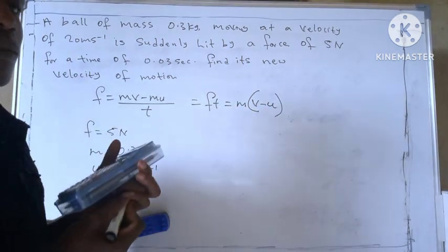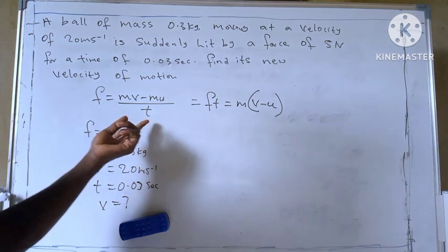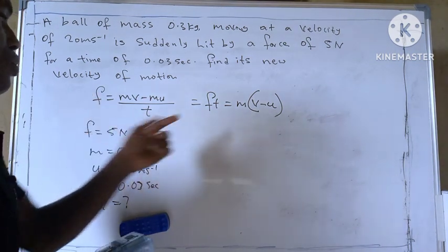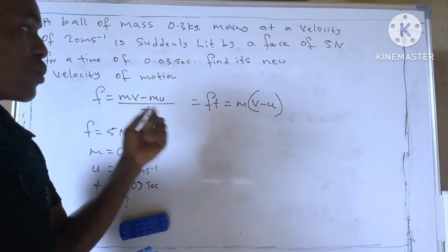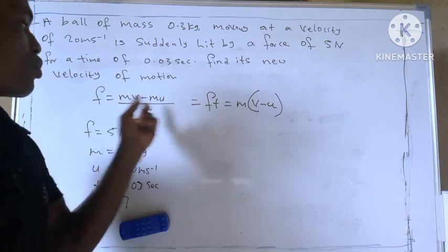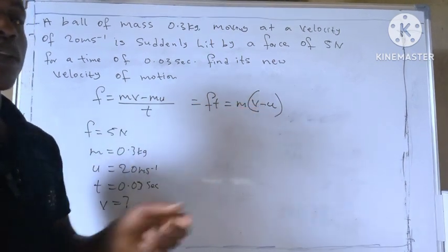Are you getting it now? We use this force to multiply the time, so we have FT equal to, here we have MV minus MU. When you factorize, M will come out, then V minus U.